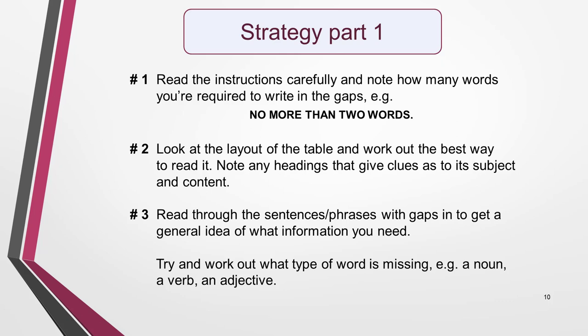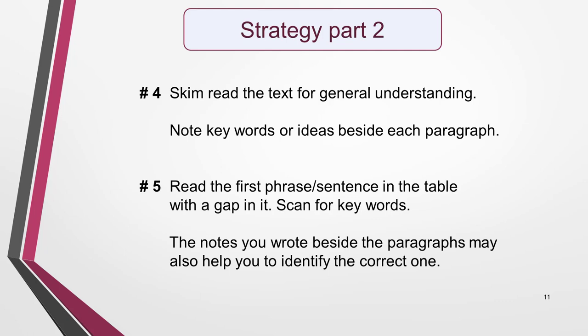I'll show you how to apply the strategy in a minute, but first you need to understand it. Start by reading the instructions carefully and noting how many words you are required to write in the gaps, e.g. no more than two words. Next, look at the layout of the table and work out the best way to read it, particularly noting any headings that will give you clues as to the subject and content. Then quickly read through the sentences or phrases with gaps in to get a general idea of what information you'll be looking for in the text. Try and work out what type of word is missing in each case, such as a noun, a verb, or an adjective. Then skim read the text to get a general understanding of what it's about, and note key words or ideas beside each paragraph. This will help you to quickly find the information again later.